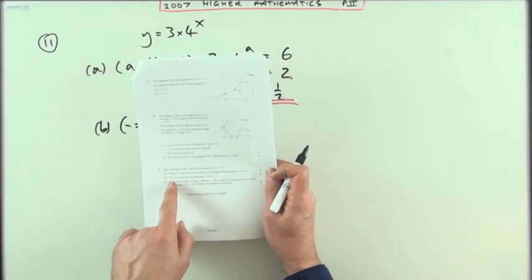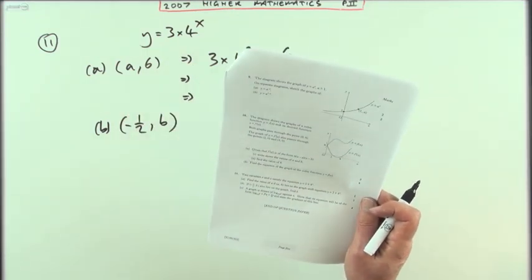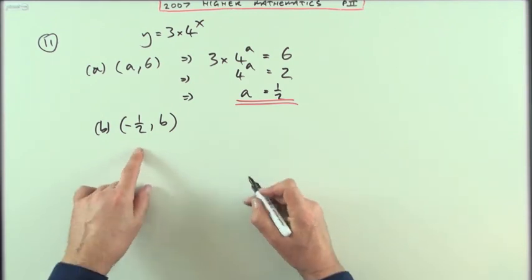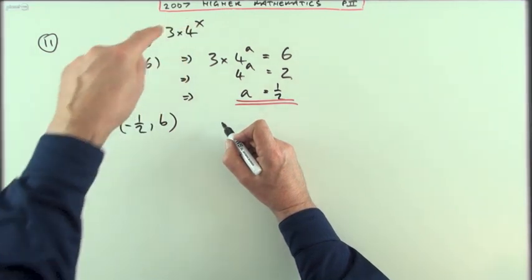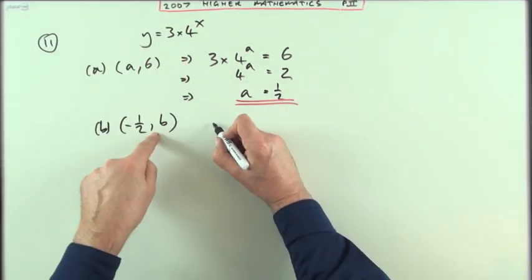Now b: if (-1/2, b) also lies on the graph, find the value of b. Right, well fair enough, just put that back in, same as before. So that says when x is negative a half, y is going to be b. So y is b.